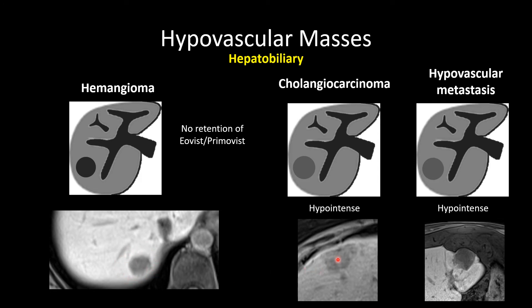Hemangiomas are hypointense, cholangiocarcinomas are hypointense, and metastatic lesions should be hypointense on the hepatobiliary phase. If a lesion is iso-intense, first make sure blood pool is cleared — confirm no contrast remains in the aorta or IVC. If there is still iso-enhancement or uptake of Eovist, there are some malignant lesions that can retain Eovist in addition to FNH, so you will need to dig deeper into the signal intensity and imaging features of the mass.